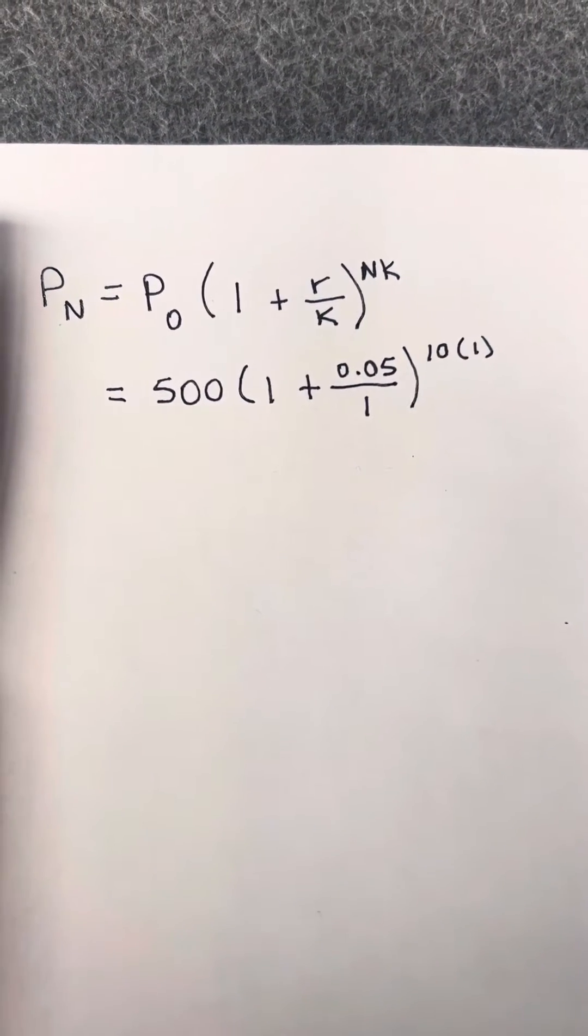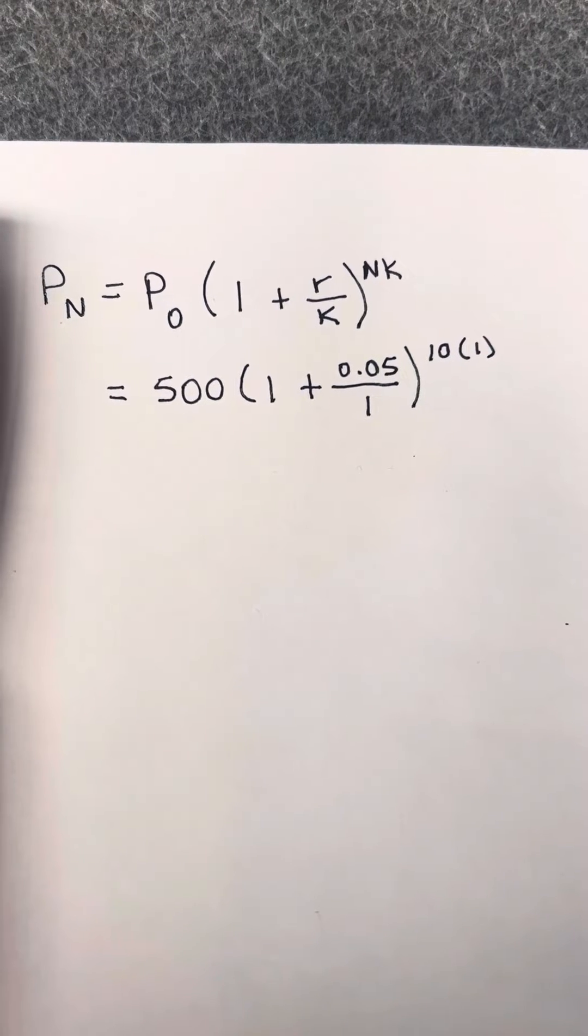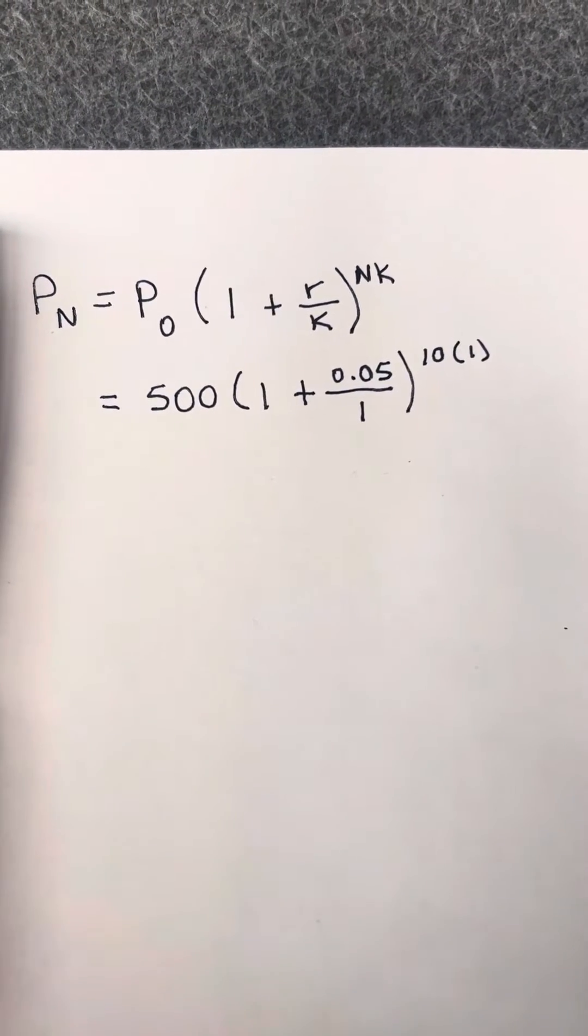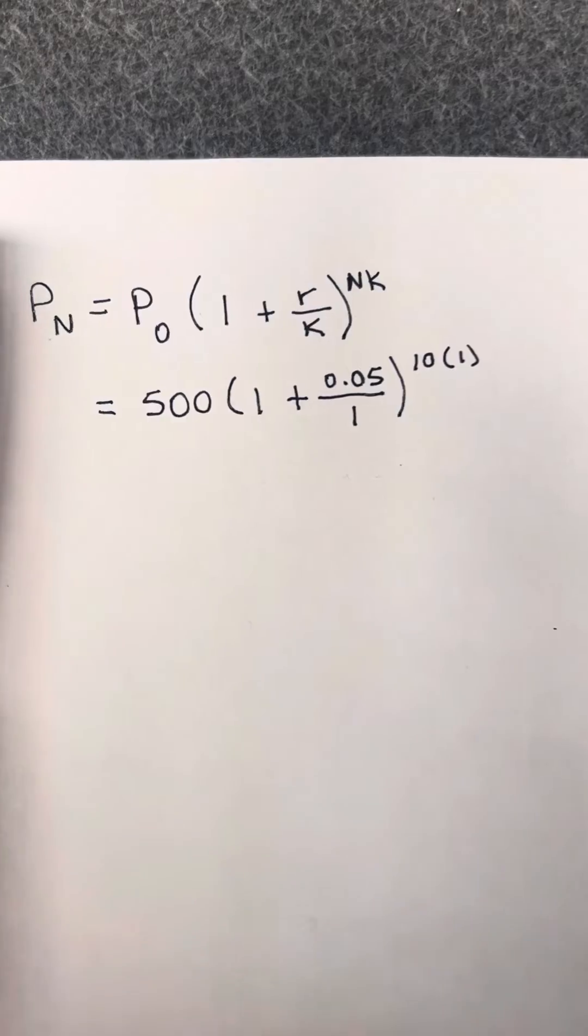Our P sub 0 is 500. We have to change it to a decimal, so instead of 5%, it's 0.05. It's compounded annually, so our K's are 1 and it's for 10 years, so our N is 10.